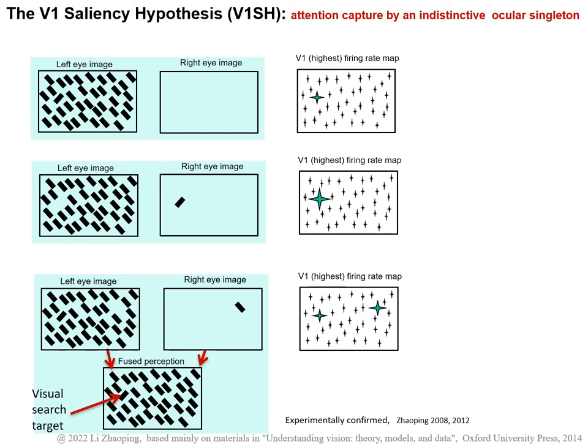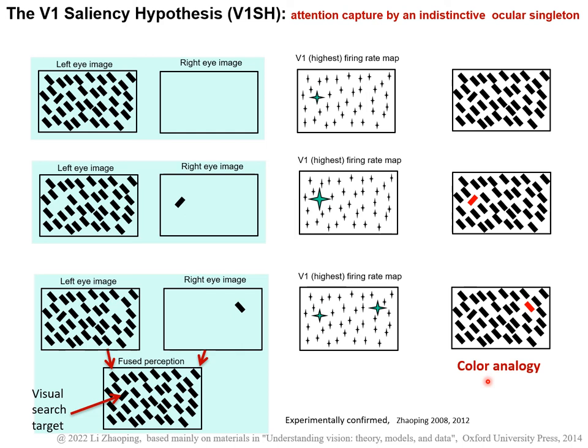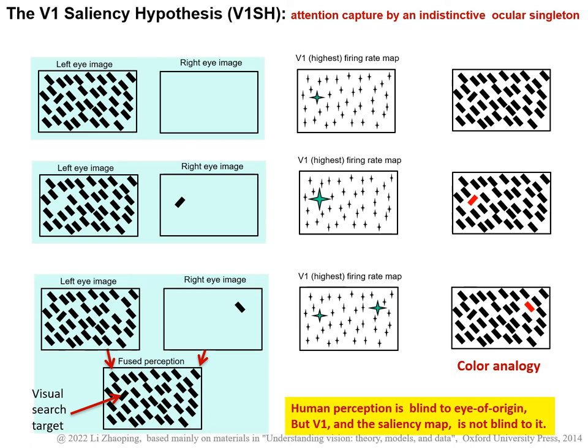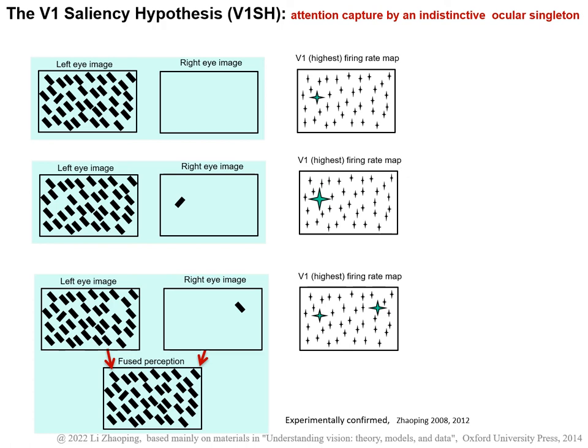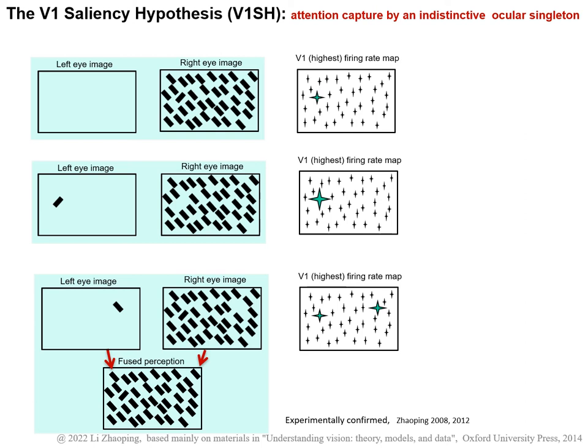If our perception were not blind to which eye receives which input bar — let's say that by some magic the bars shown to the right eye have a red color — then a unique color would be very salient, helping to guide attention to the target in one case, but distracting attention in another. So human perception is blind to eye of origin, but the V1 saliency map is not blind to it. Of course, what we have talked about still holds when the inputs to the two eyes are swapped, so that an item unique in the left eye is also salient.